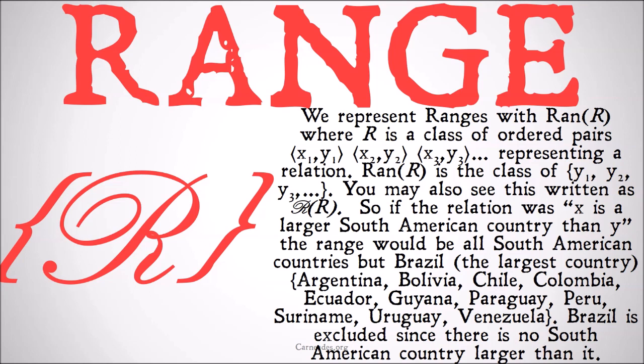So if the relation is 'X is a larger South American country than Y', the range would be all South American countries but Brazil, which is the largest country — namely Argentina, Bolivia, Chile, Colombia, Ecuador, Guiana, Paraguay, Peru, Suriname, Uruguay, and Venezuela. Brazil is excluded since there's no South American country larger than it to fulfill the first half of that relation. So there's no case where you would have X as 'is a larger South American country than Brazil' because there's no such X. So Brazil is not included in the range, but all the other South American countries are.